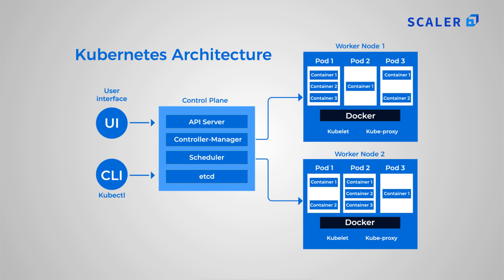Kubelet is the component that actually runs the pods. Its core purpose is to enforce the directives coming from the head node and report back the actual condition of the worker node. It also updates information with the cluster. Kubeproxy is responsible for managing the traffic coming into a node from the service, and then routes work to the suitable container. With this we move to our next topic: the need for Kubernetes.